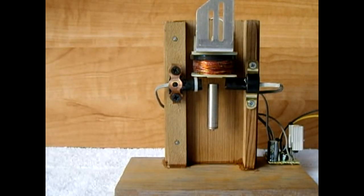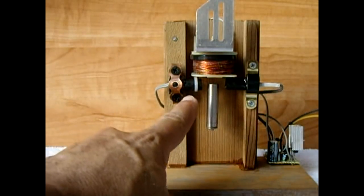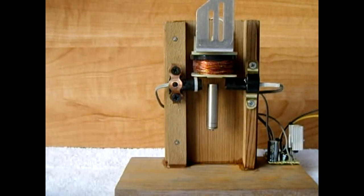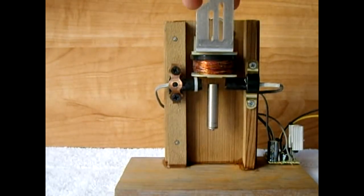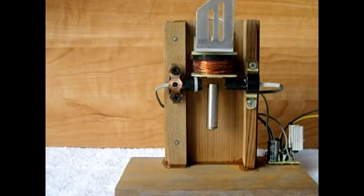Once you do that, then you want to adjust the spacing. And the way to adjust the spacing is you're going to put a digital multimeter on the two wires leading into your electromagnet and you're going to monitor that.